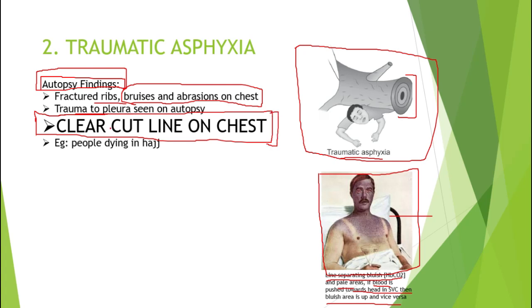In what cases is traumatic asphyxia found? A well-known example is people dying during Hajj. If a person falls in the crowd and others step on them, the chest wall becomes immobilized — which is exactly the definition of traumatic asphyxia.